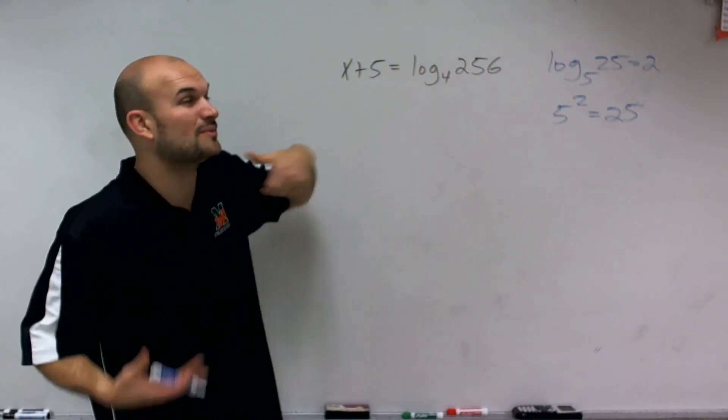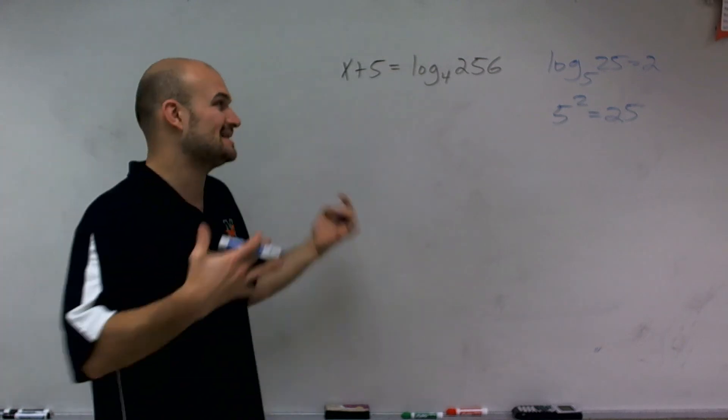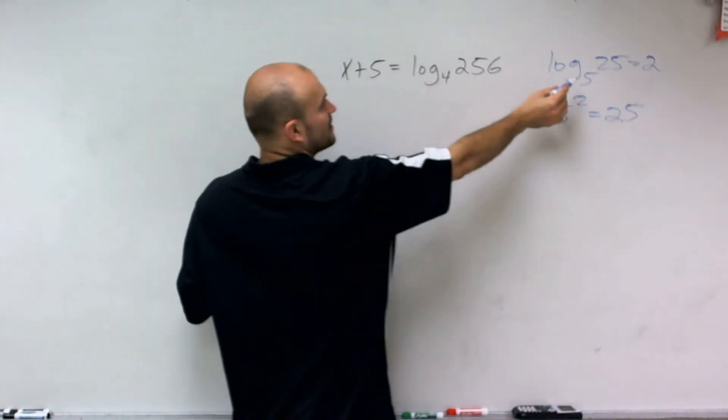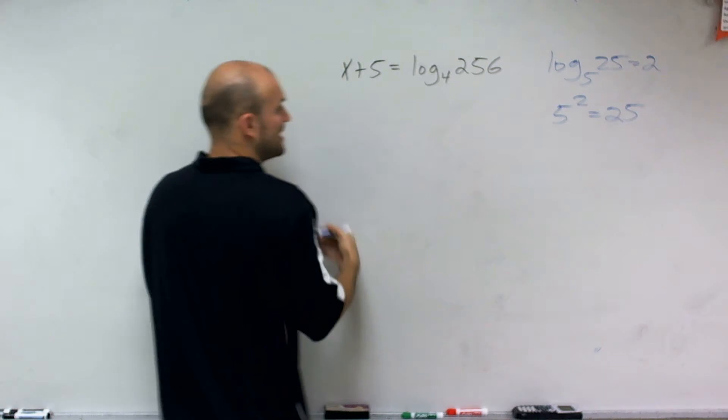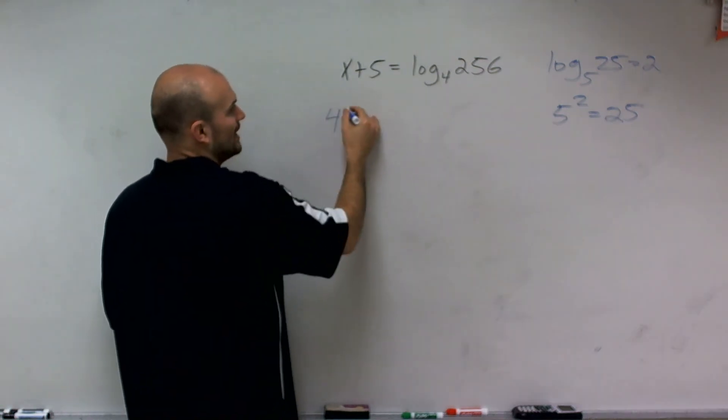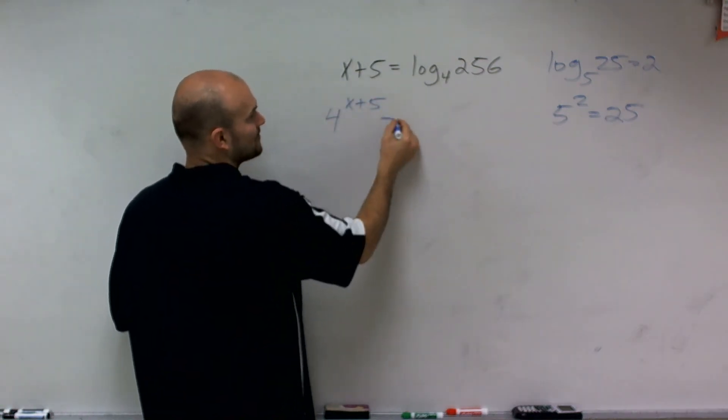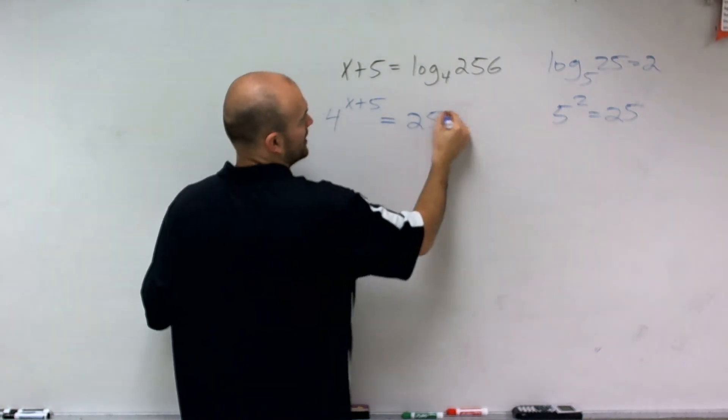So to rewrite this in exponential form, we have to make sure, again, that the base is exactly the same. So notice the base of my logarithm is the base of my exponent. So I have 4 raised to the x plus 5 equals 256.